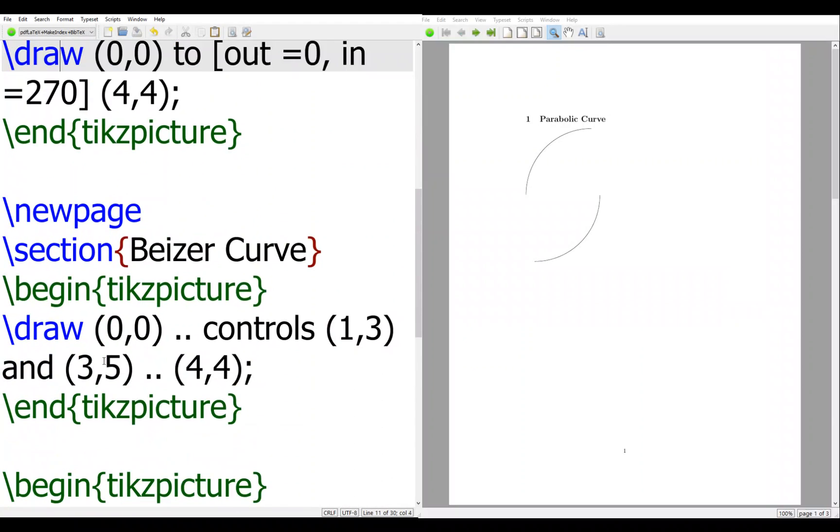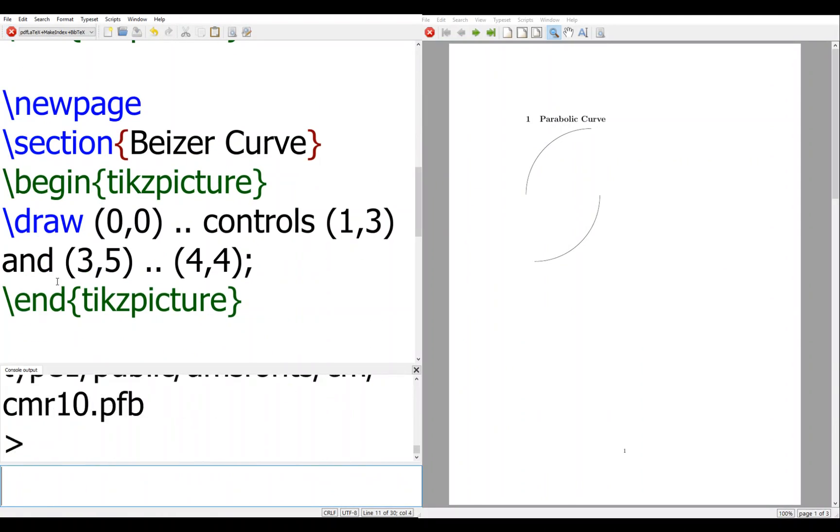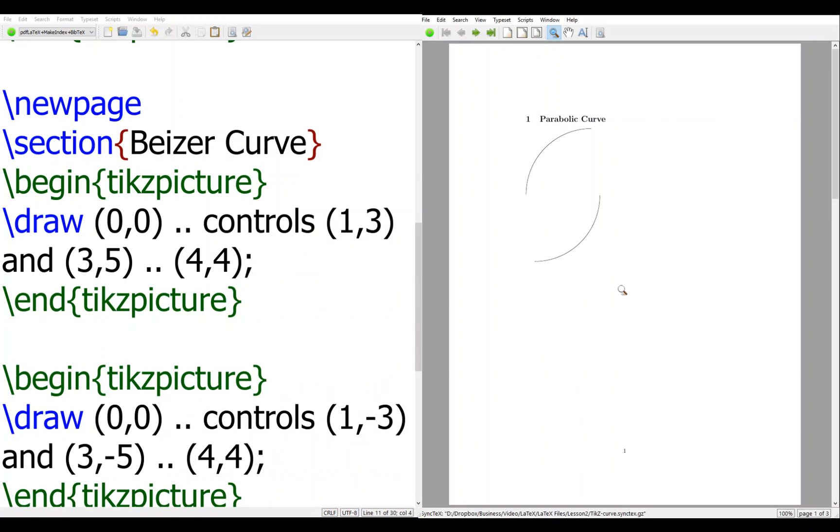So this is the curve. And you can see from 0,0 to 4,4. And these two controls, 1,3, and 3,5 is you can say control line. It's almost not touching the control two point. But you will be moving from one way to the other.